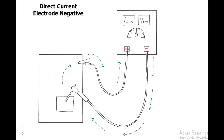Welcome back everyone. We're going to pick this video up where the previous one left off, ending with direct current electrode positive. This is where we're going to start talking about direct current electrode negative. Let's take a look at this diagram - it looks pretty similar to the diagram we saw with direct current electrode positive, so let's re-familiarize ourselves with some of the objects we see here.